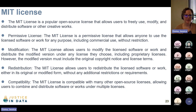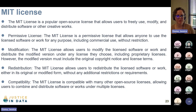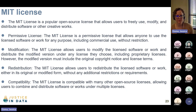If you're going to use a work from an MIT license, you can change what it's licensed under, but you always have to tell future users what the original terms of that license were. The MIT license also allows users to redistribute the licensed software or work, either in its original or modified form, without any additional restrictions. And the MIT license is compatible with many other open source licenses, allowing users to combine and distribute software or works under multiple licenses.